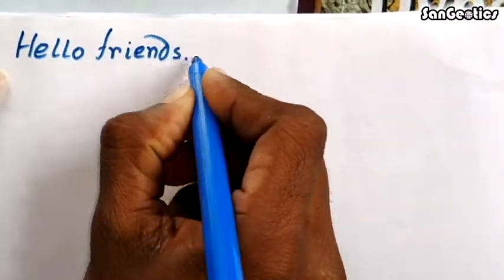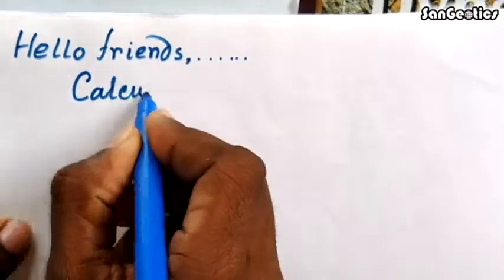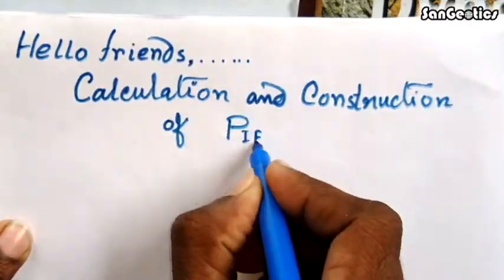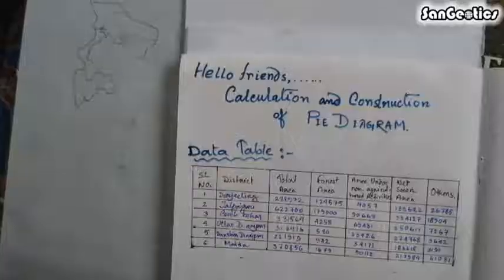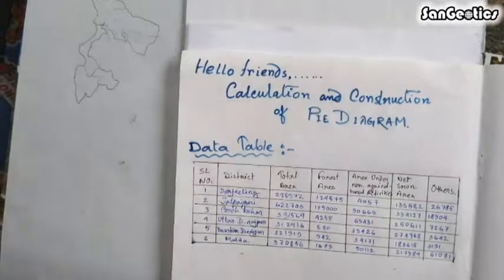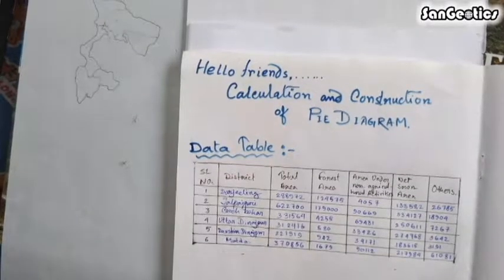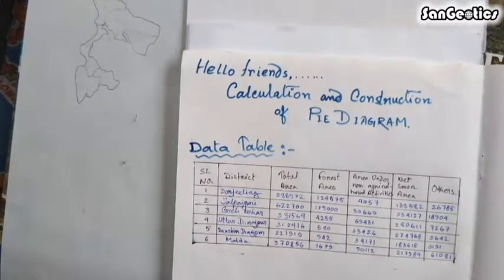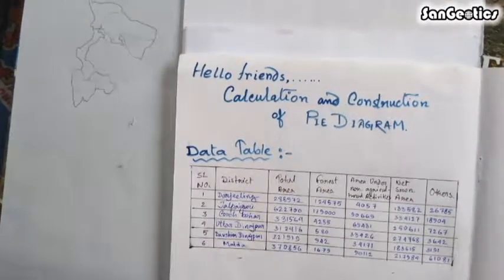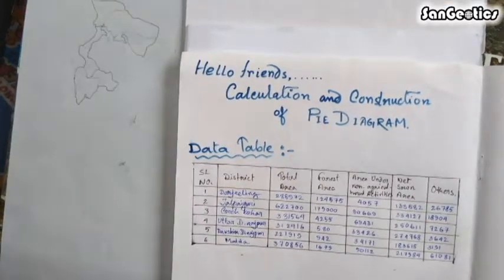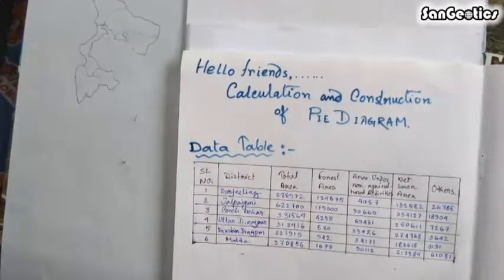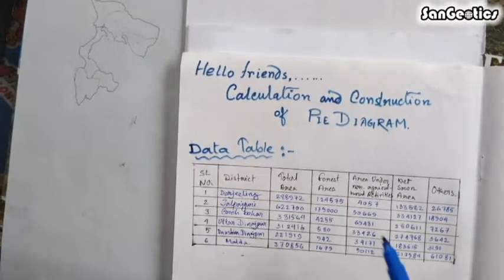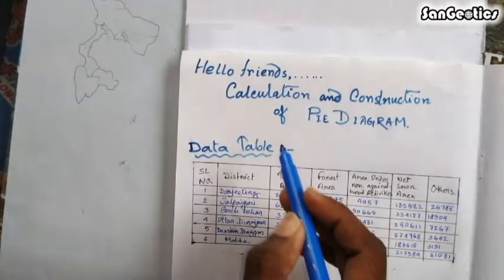Hello friends, today I am going to discuss the calculation and construction of a pi diagram. To construct the pi diagram, we need one data table and two data-related maps. After collecting the data and data-related maps, we need to calculate the data through sample steps.